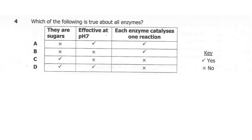Question 4. Which of the following is true about enzymes? A: effective at pH 7 and each enzyme catalyses one reaction. B: each enzyme catalyses one reaction. C: they are sugars. D: they are sugars and effective at pH 7. So what's the correct answer here? Is it A, B, C, or D?